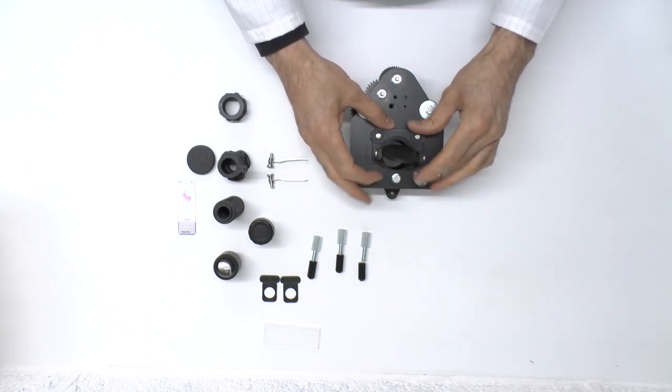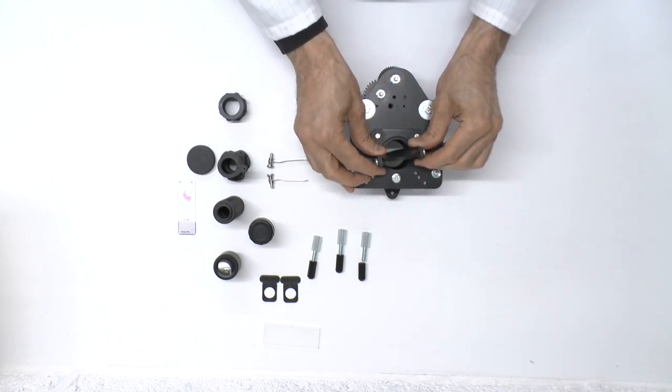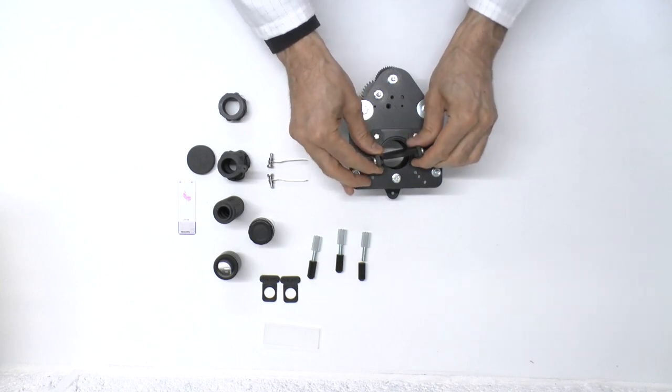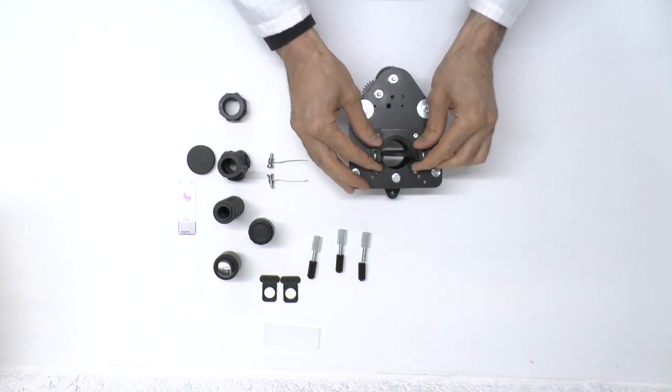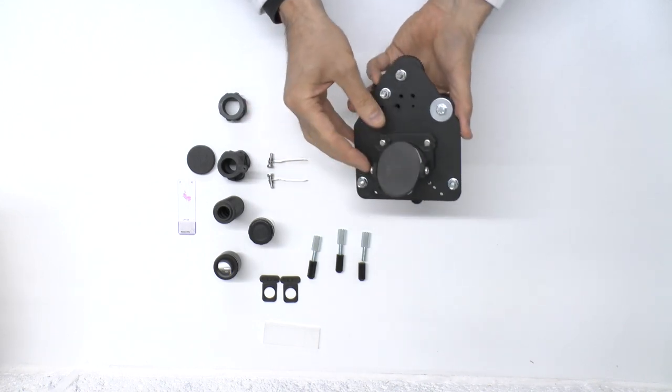And once you've got it in, you simply tighten these up to a reasonable level. You may want a little bit of play in it, so you can adjust the mirror, but you don't want it to be particularly loose. It doesn't have to be very tight, but you don't want it too loose either. So that's our mirror in place.